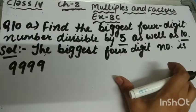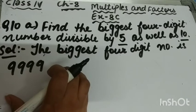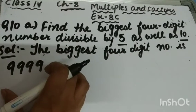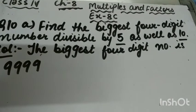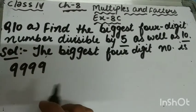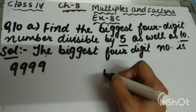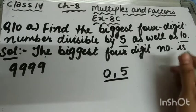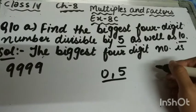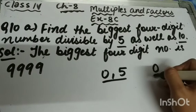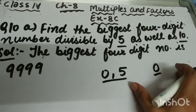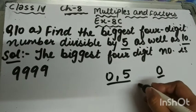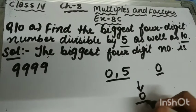The biggest 4-digit number is 9999, but this is not divisible by 5 or 10. For a number to be divisible by 5, it should have 0 or 5 at its ones place, and for a number to be divisible by 10, it should have 0 at its ones place. Since we want a number divisible by both 5 and 10, the ones digit must be 0.